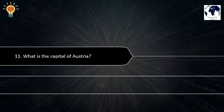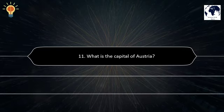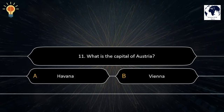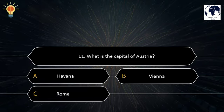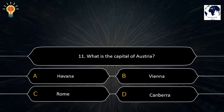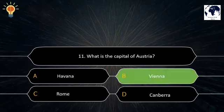Question number 11. What is the capital of Austria? Option A: Havana. Option B: Vienna. Option C: Rome. Option D: Canberra. The correct answer is Option B — Vienna.